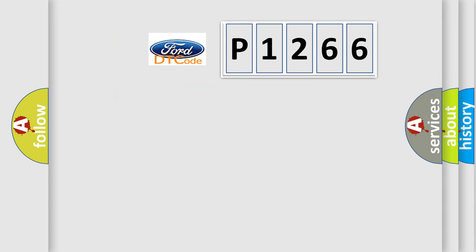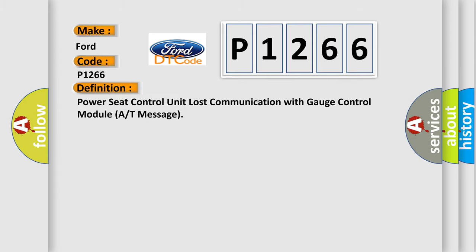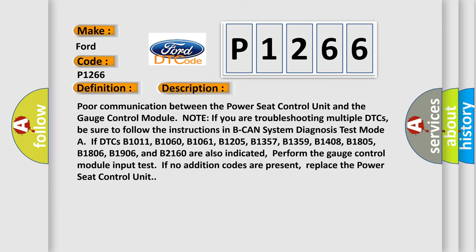So, what does the diagnostic trouble code P1266 interpret specifically for Ford car manufacturers? The basic definition is: Power seat control unit lost communication with gauge control module A or T message. This is a short description of this DTC code: poor communication between the power seat control unit and the gauge control module. Note: if you are troubleshooting multiple DTCs, be sure to follow the instructions in BCAN system diagnosis test mode. If DTCs B1011, B1060,